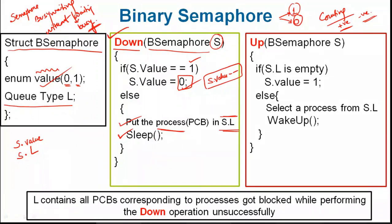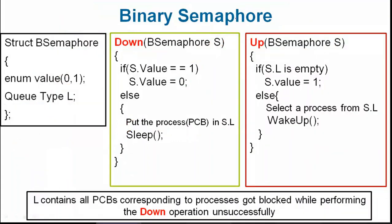Now let's look at the up operation. Up is executed when you are done with the critical section. In the up operation, if the queue is empty, you don't have to do anything special — you just set the value of the semaphore back to 1.